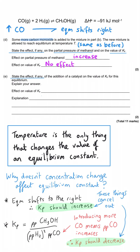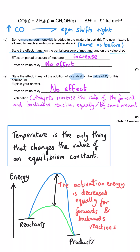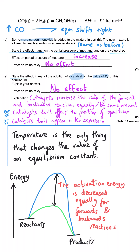Finally, adding a catalyst has no effect on the value of Kp. The explanation is that catalysts increase the rate of the forward and backward reactions equally, because they decrease the activation energy equally in both directions. Alternatively, catalysts don't affect the position of equilibrium, or more mathematically, catalysts don't appear in the Kp expression. The key point to remember is that only temperature affects the value of an equilibrium constant.